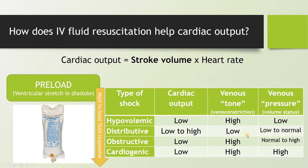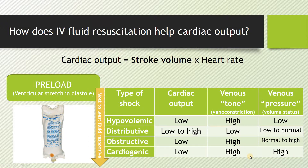Different types of shock have different responsiveness to fluids. Distributive shock is a close second to hypovolemic in fluid responsiveness — it's often a loss of venous tone, the venous vessels lose their ability to constrict, so you need more volume to increase cardiac output. As you move toward obstructive and cardiogenic forms of shock, they become less and less fluid responsive. Cardiogenic shock is least amenable because venous pressure is already maximal in many patients.